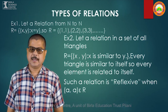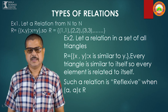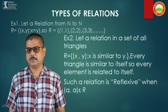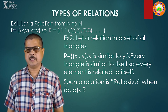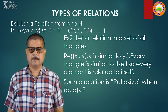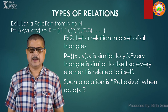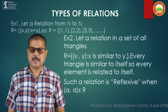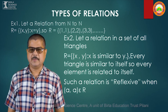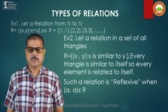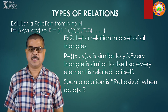Now coming to the types of relations. I will explain by taking 2 examples of each type. First example: let a relation from natural numbers to natural numbers be given by R = {(x,y) such that x = y}. If we write the relation, it will be (1,1), (2,2), (3,3) and so on. Second example: suppose a relation in the set of all triangles where the relation is given by {(x,y) such that x is similar to y}. Each triangle is similar to itself. So every element in both examples is related to itself. Such a relation is known as a reflexive relation — when (a,a) belongs to R for every element of the set.